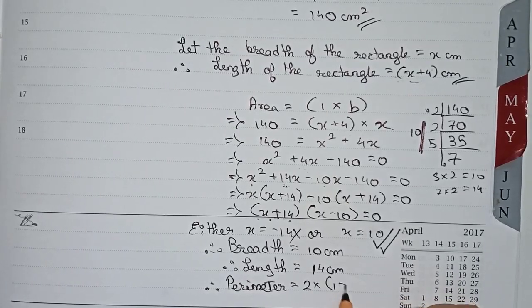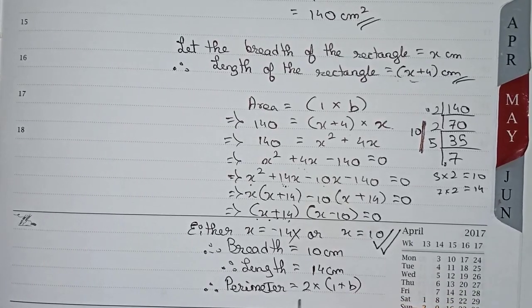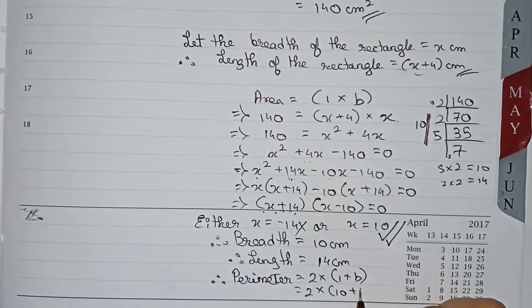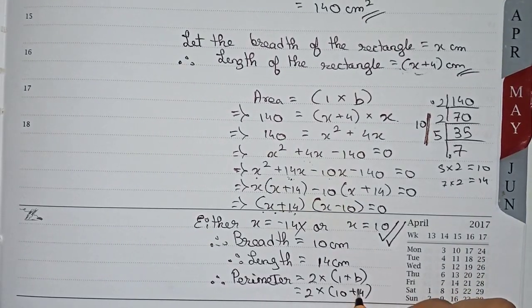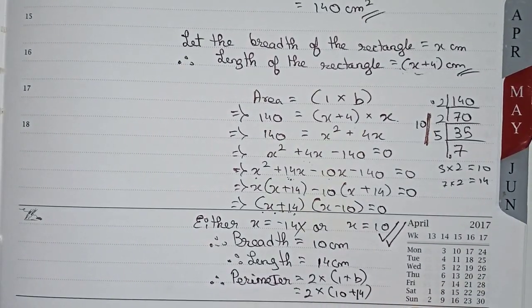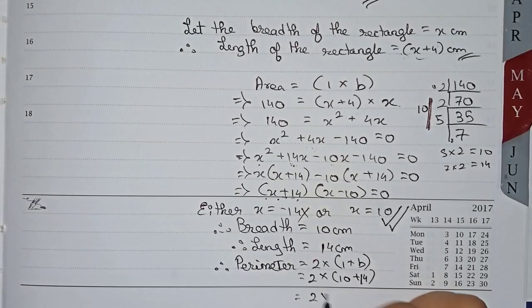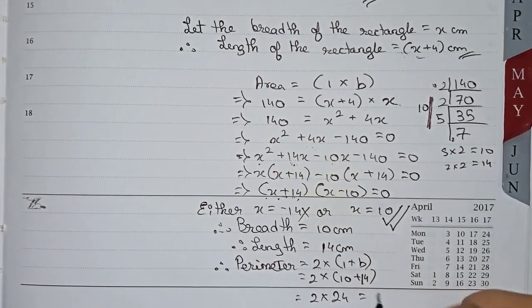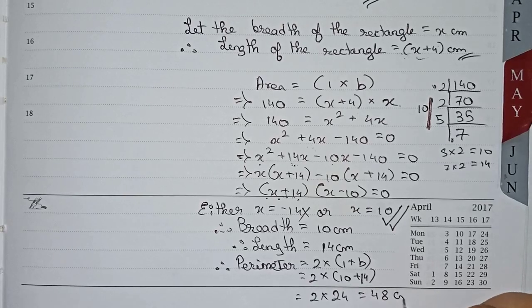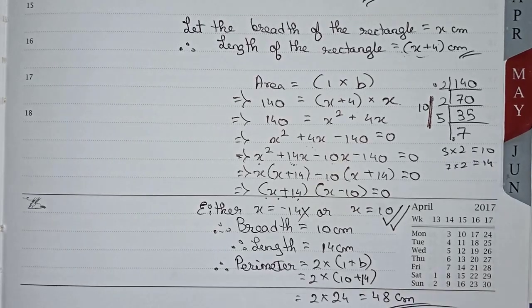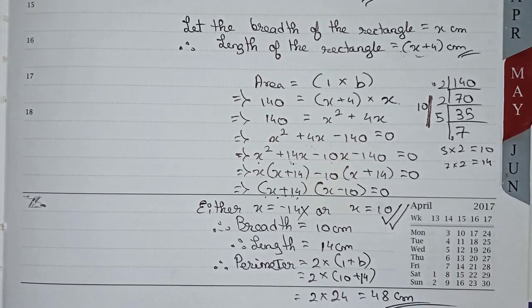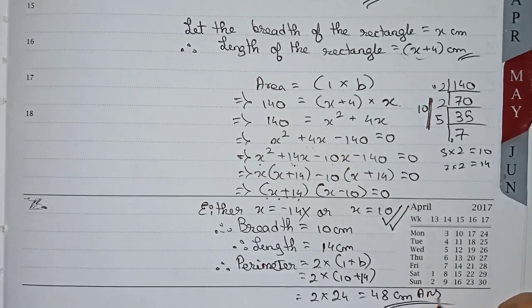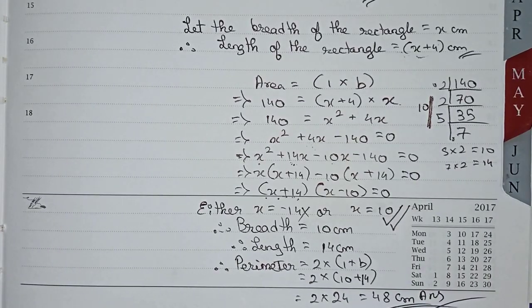Finally, the perimeter of the rectangle is equal to 2 times (length plus breadth), which is 2 times (14 plus 10), giving 2 times 24, which equals 48 centimeters. This is the final answer for this question. Thanks for watching this video, and please subscribe to my channel for more solutions like this.